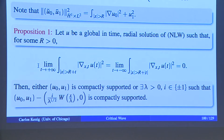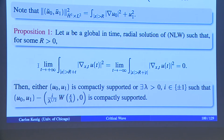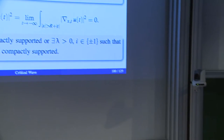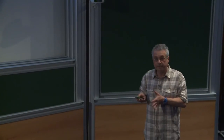Of course, if U₀, U₁ is compactly supported in the ball of radius R, this is true because it's just zero there by finite speed. And if it equals W outside the ball of radius R, this is also true because for W it holds. So this is a way in which we can capture W.